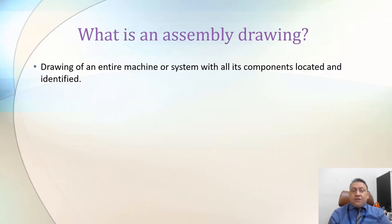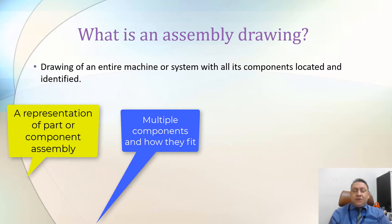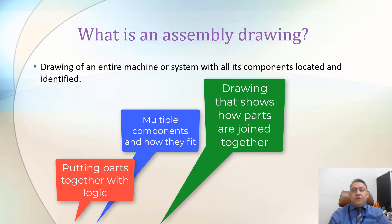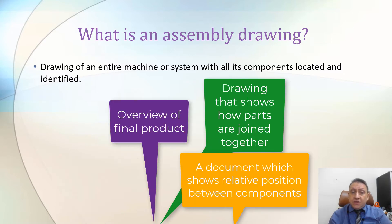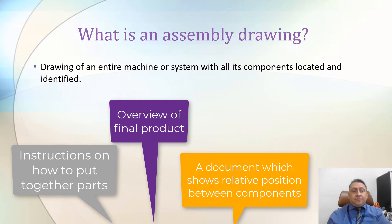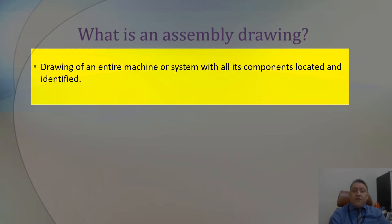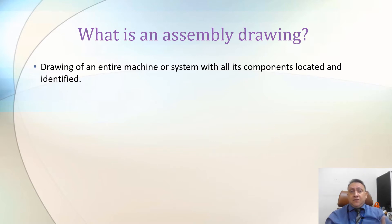As you all mentioned in your quiz or in your game, that assembly drawing that's more than one part, like two parts or more, assembly drawing parts that they have relation between each other. So all this correct. Assembly drawing is a drawing of entire machine or system with all the components are located and identified.